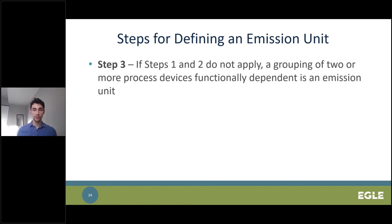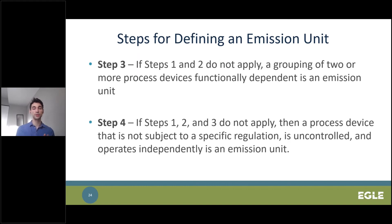If Steps 1 and 2 don't apply, we move to Step 3: a grouping of two or more process devices that are functionally dependent can be considered an emission unit — for example, a series of tanks used to plate metal parts. If Steps 1 through 3 don't apply, Step 4 applies: a process device not subject to specific regulation, uncontrolled and operating independently, is its own emission unit.